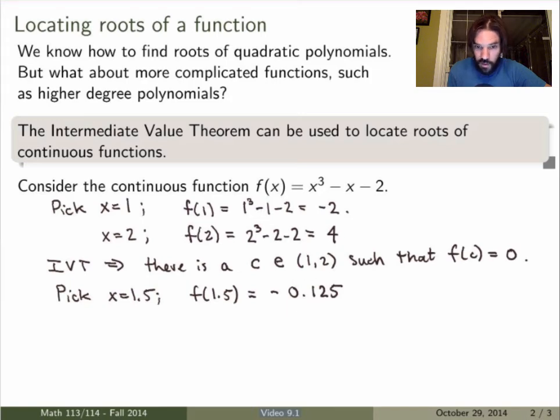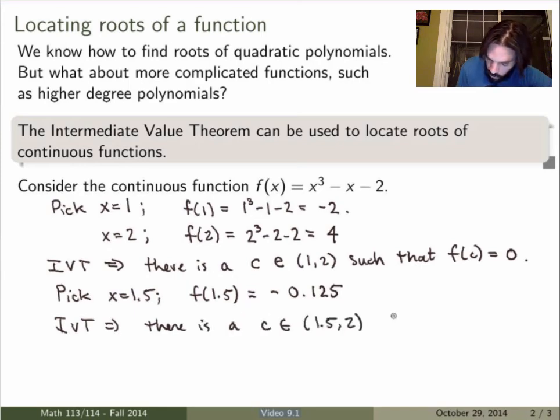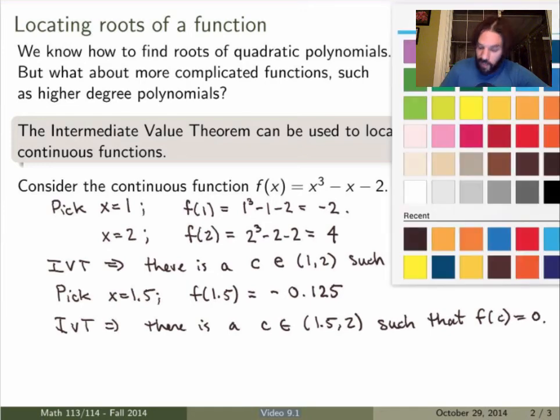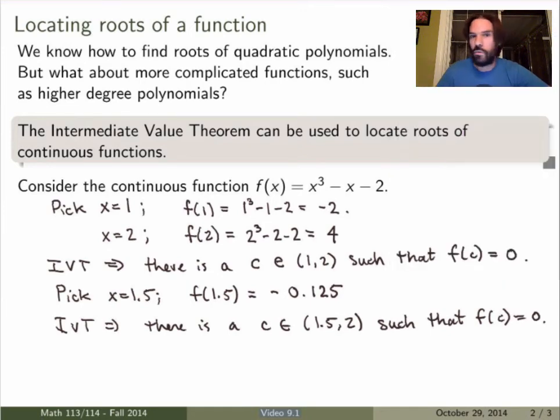Now this is still negative here, and f(2) is still 4, so 0 lies between -0.125 and 4, so IVT now implies, again, that there is a c, but now between 1.5 and 2 such that f(c) is 0. I still don't know exactly where it is, but now I've made the interval smaller. I know it's now between 1.5 and 2, and of course I can keep going like that, do it as many times as I want, and I get a better and better approximation of the zeros of my function.